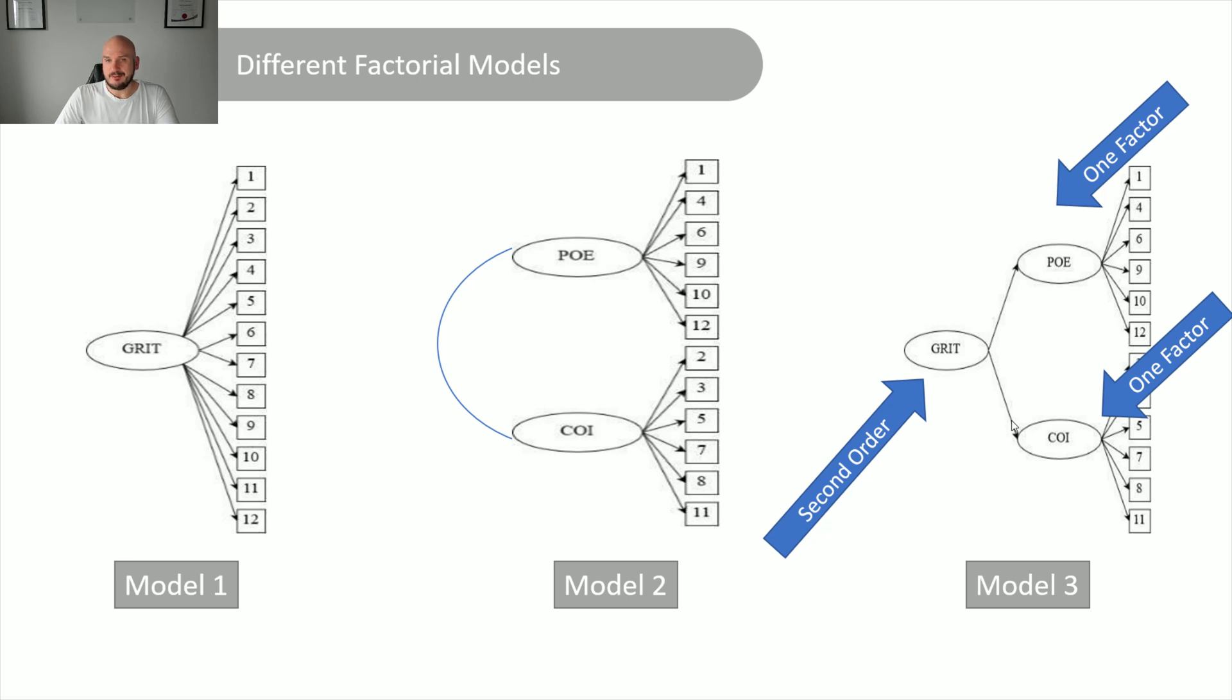Now, like we know, this might have convergent issues. But I hope that this kind of explains to you what the difference is between the three factors. One-factor model, all of the items load directly onto it. One line is regressed to one.